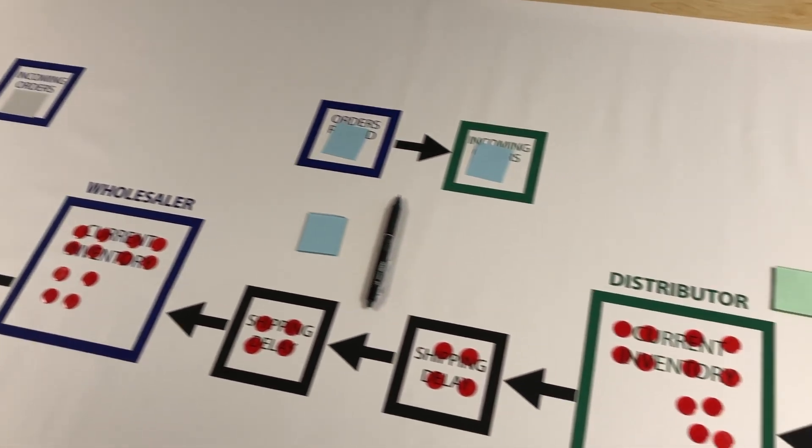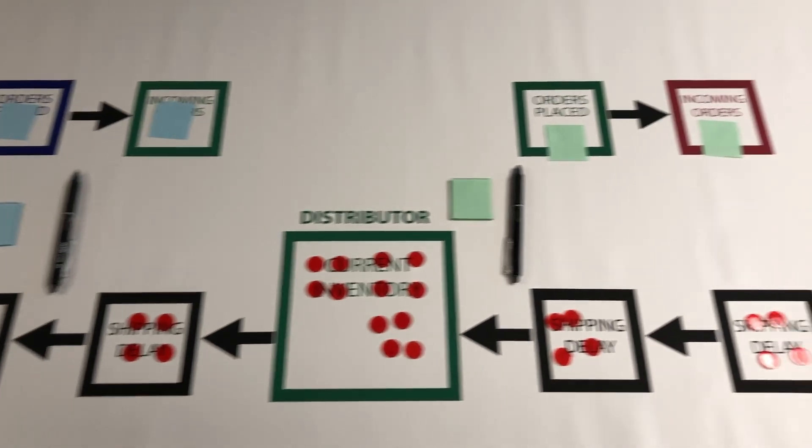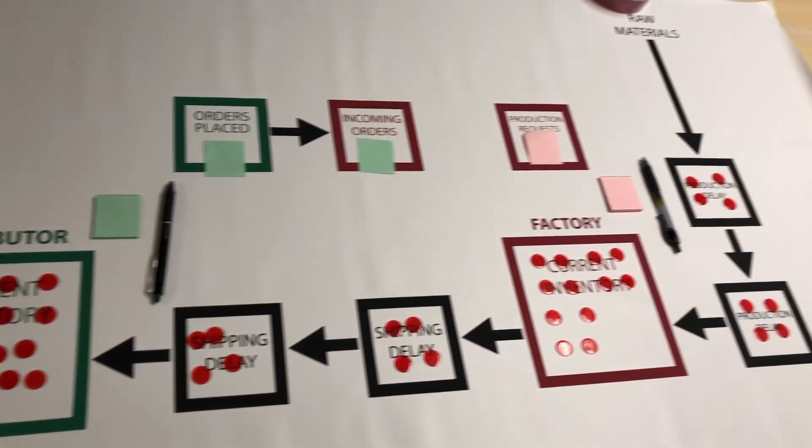Take two pieces of paper from each pad, write the number 4 on them, and place them face down in the orders placed and incoming orders boxes.